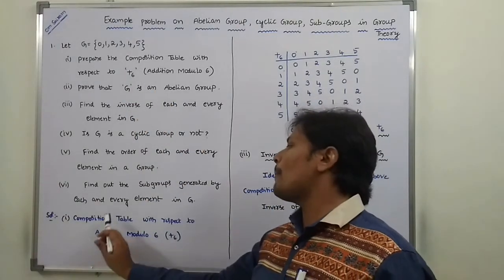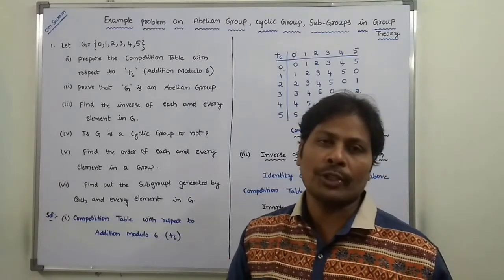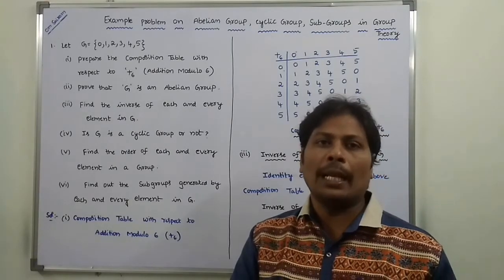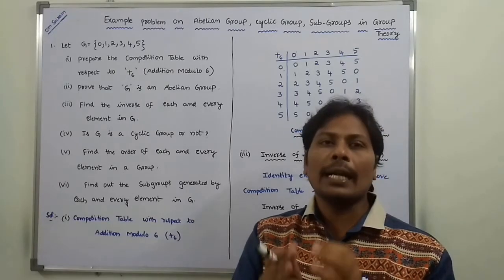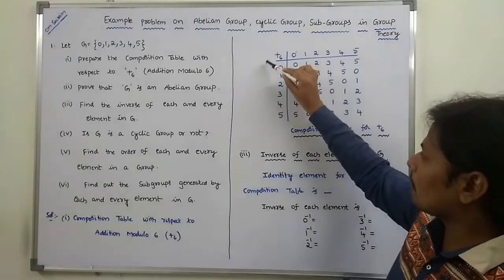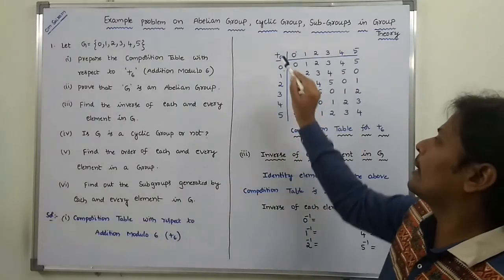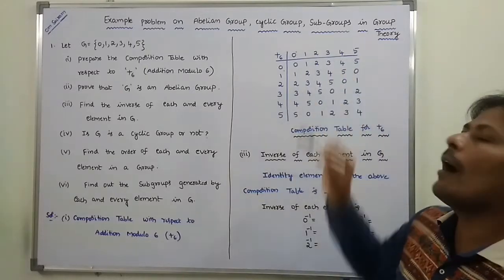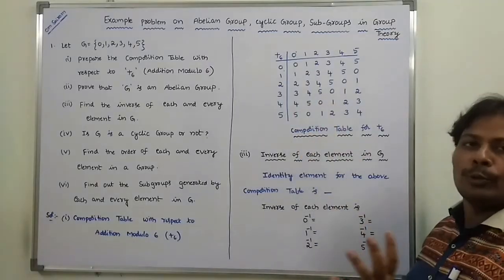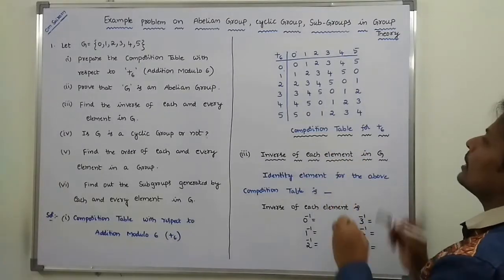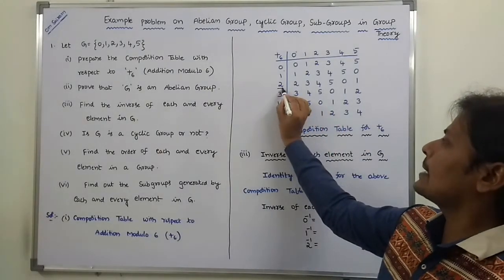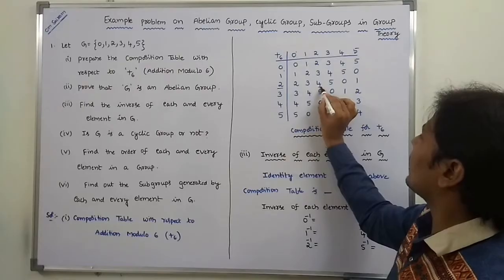First sub-problem: prepare the composition table with respect to addition modulo 6. For constructing the addition modulo 6 composition table, whatever the elements in the given set, those elements are written row-wise and column-wise. After writing the elements in row-wise and column-wise, we have to fill the composition table.